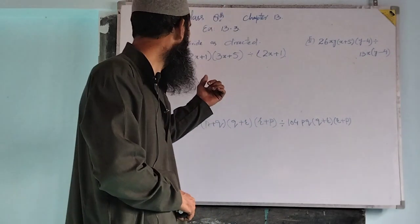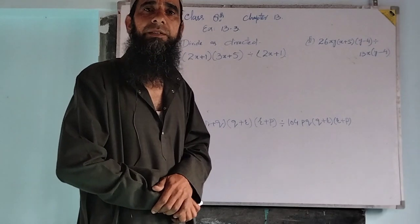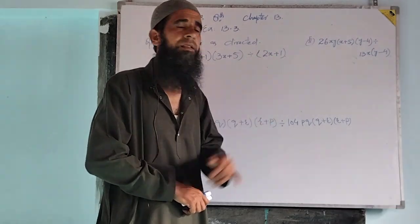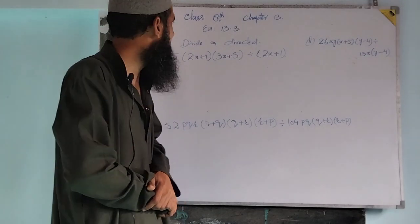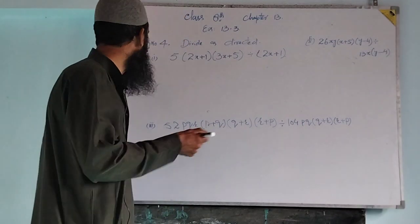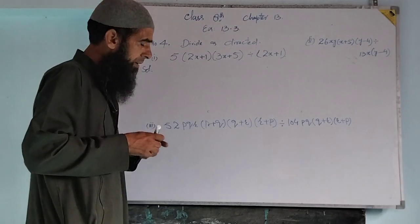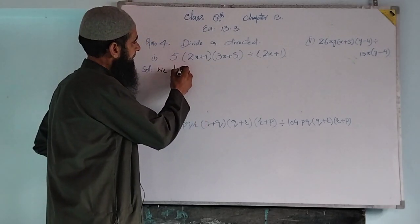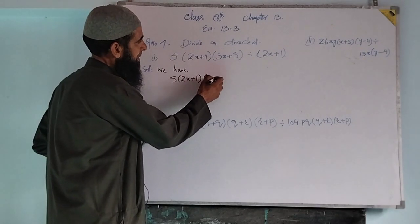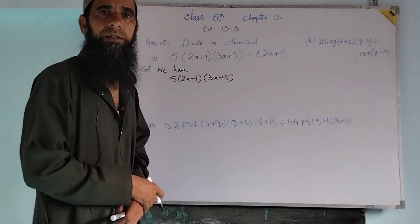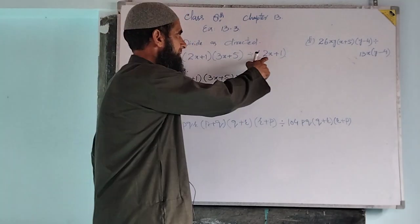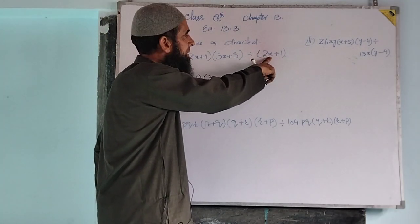The first part of this question is: we have an algebraic expression divided by another algebraic expression, and we have to simplify this. This is a very simple question. We have 5 into (2x+1) into (3x+5). This divide can be changed into multiplication and we take the reciprocal of the second algebraic expression.